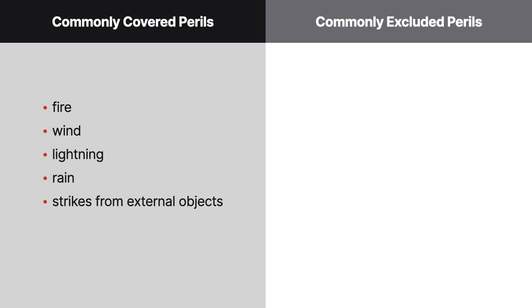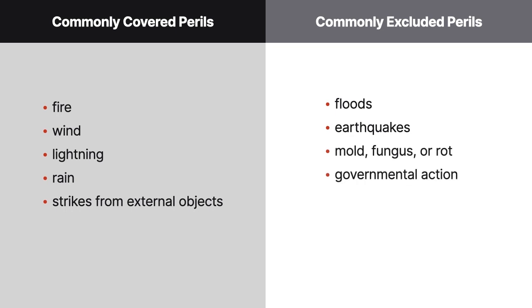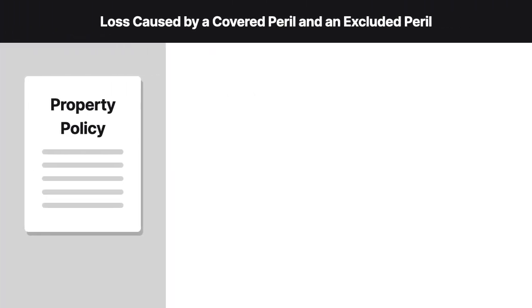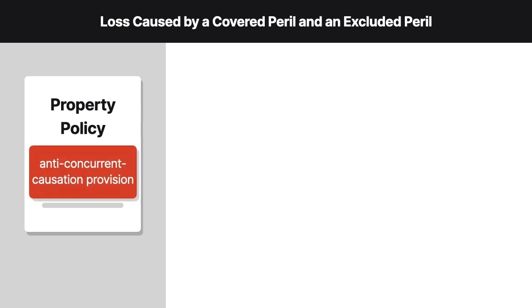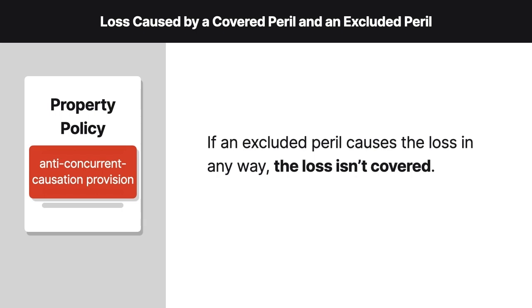Commonly excluded perils include floods, earthquakes, mold, fungus, or rot, and governmental action. What if a loss is caused by both a covered peril and an excluded peril? Two possible policy provisions address mixed causes in opposite ways. Under an anti-concurrent causation provision, if an excluded peril causes the loss in any way, the loss isn't covered.